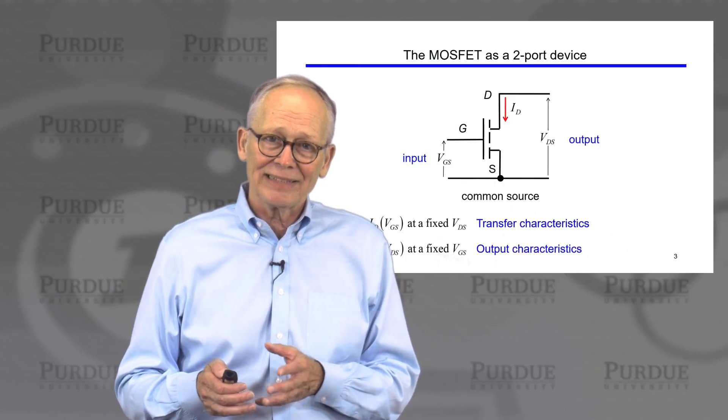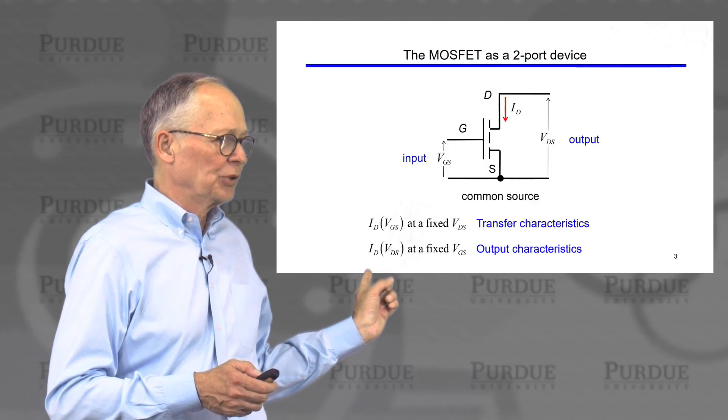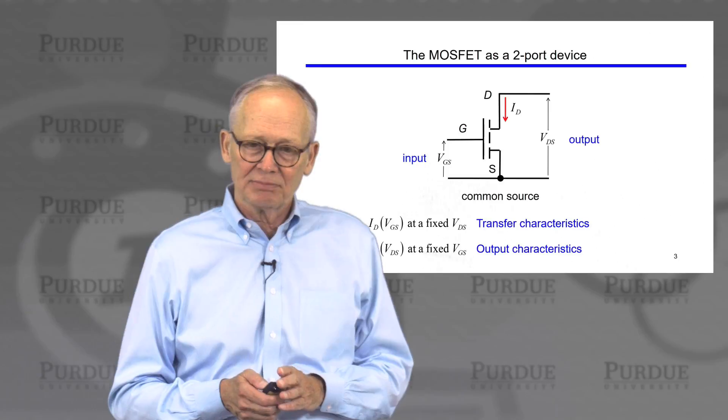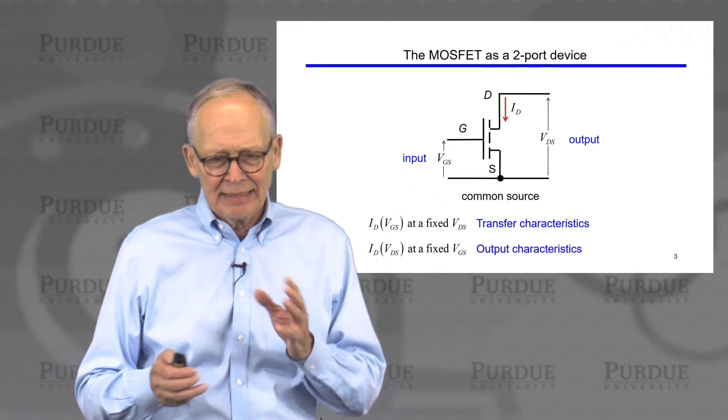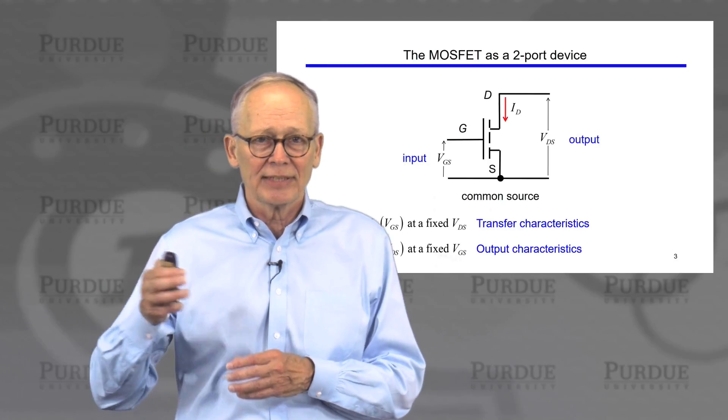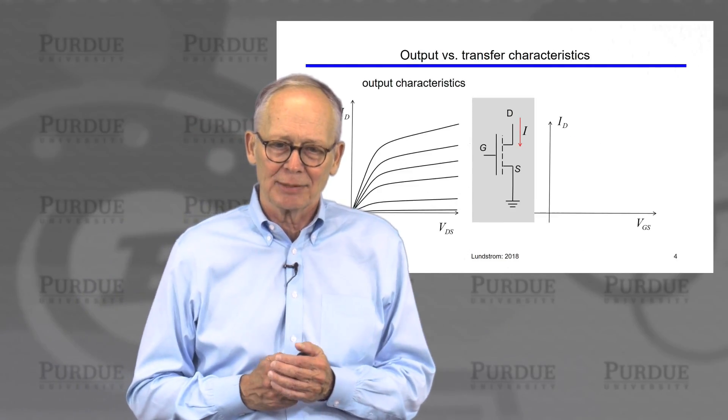Now we can also plot the output characteristics. The output voltage is the output current versus the output voltage at a fixed input voltage. So these are called output characteristics. So try to be familiar when I refer to a transfer characteristic of a MOSFET or output characteristic of a MOSFET. Be sure you understand what I'm talking about.